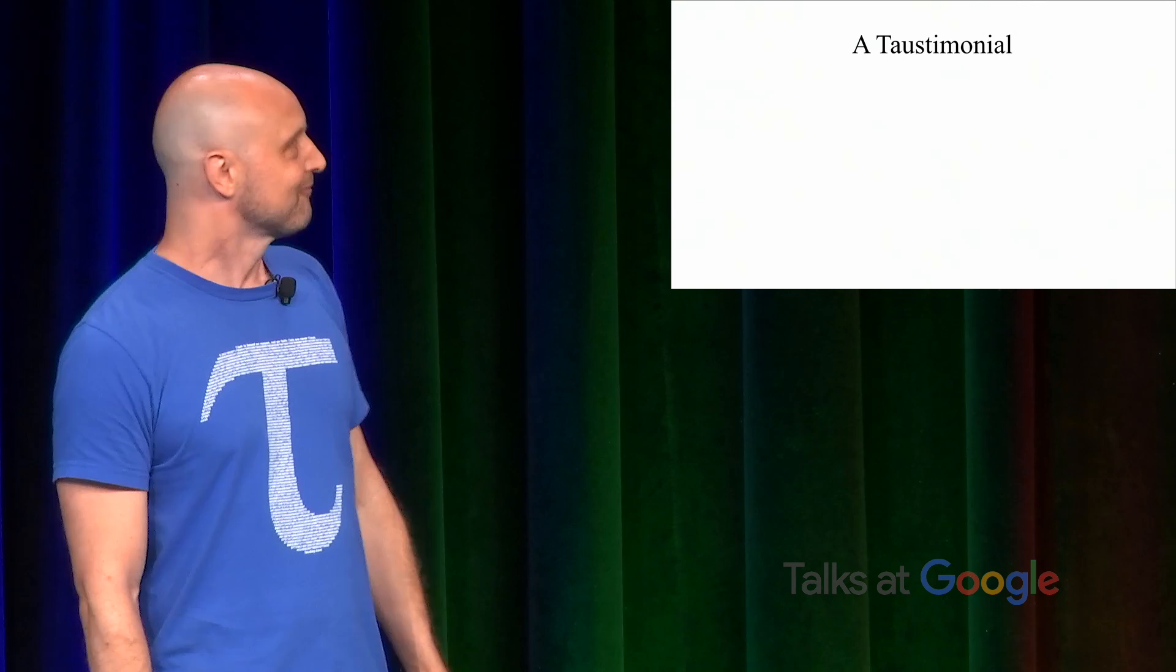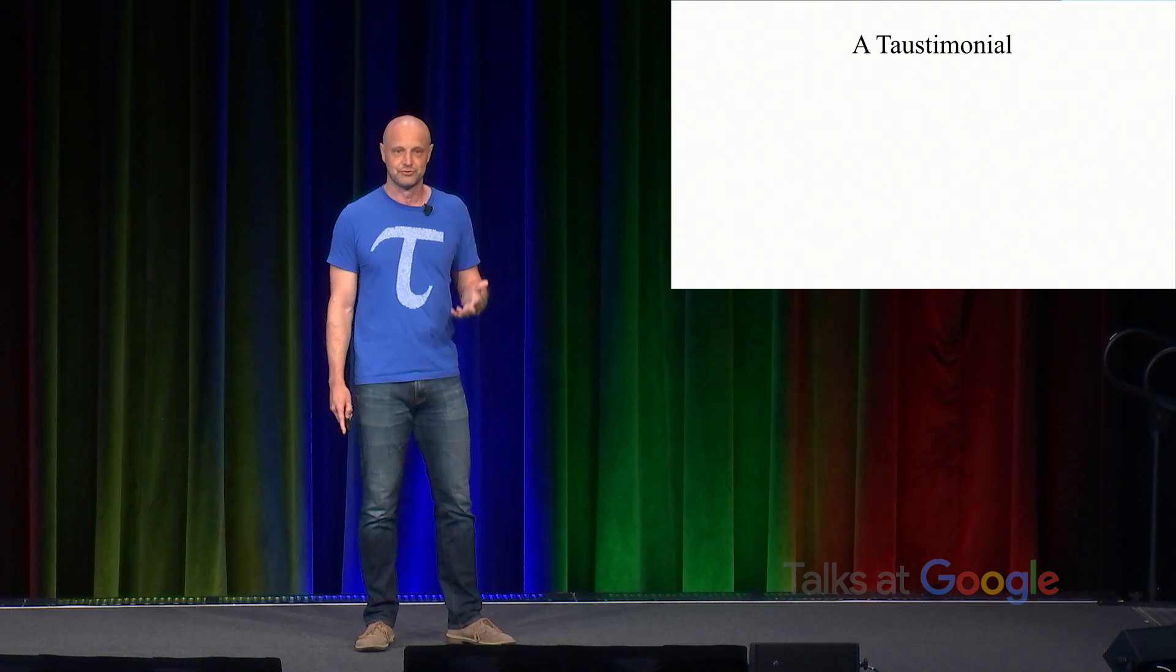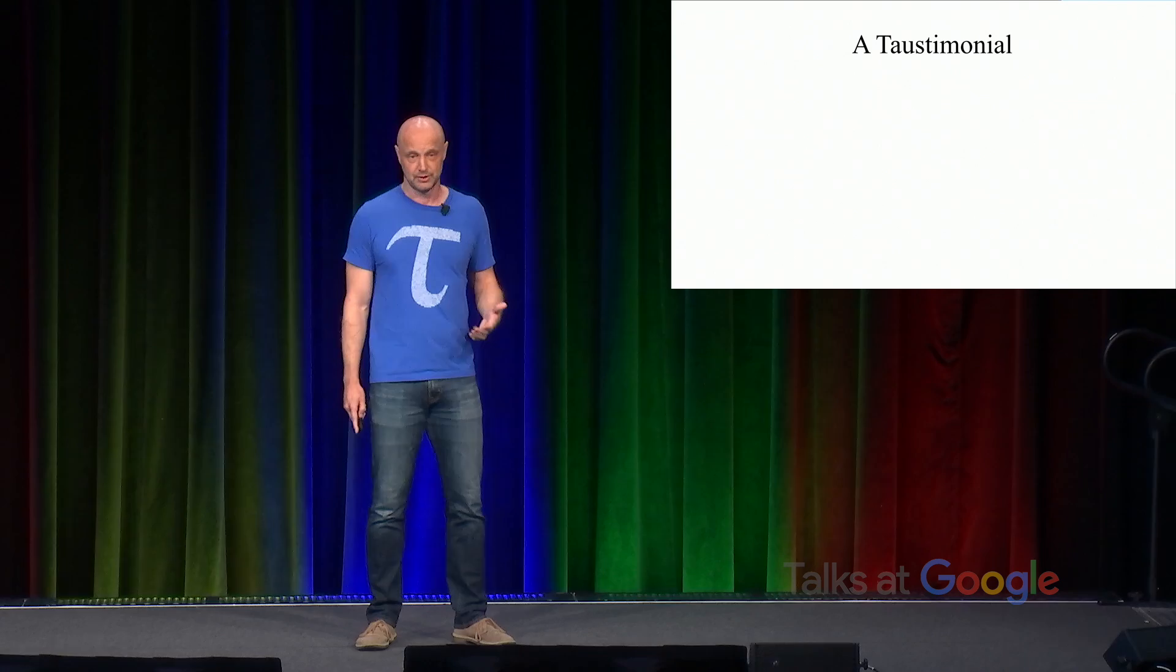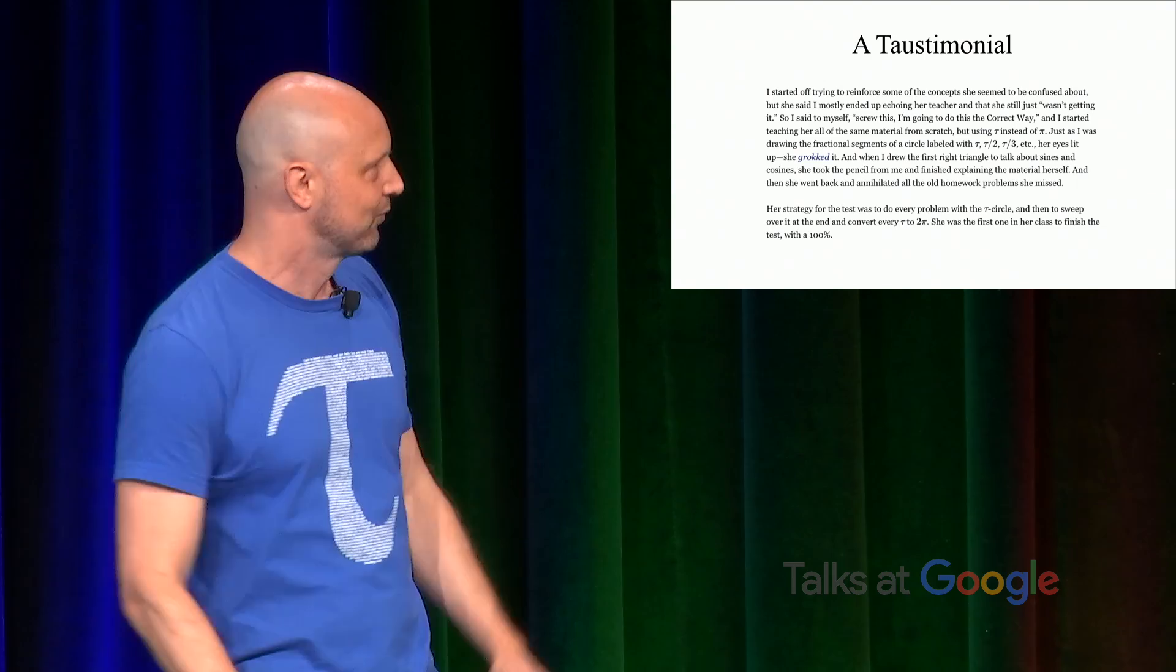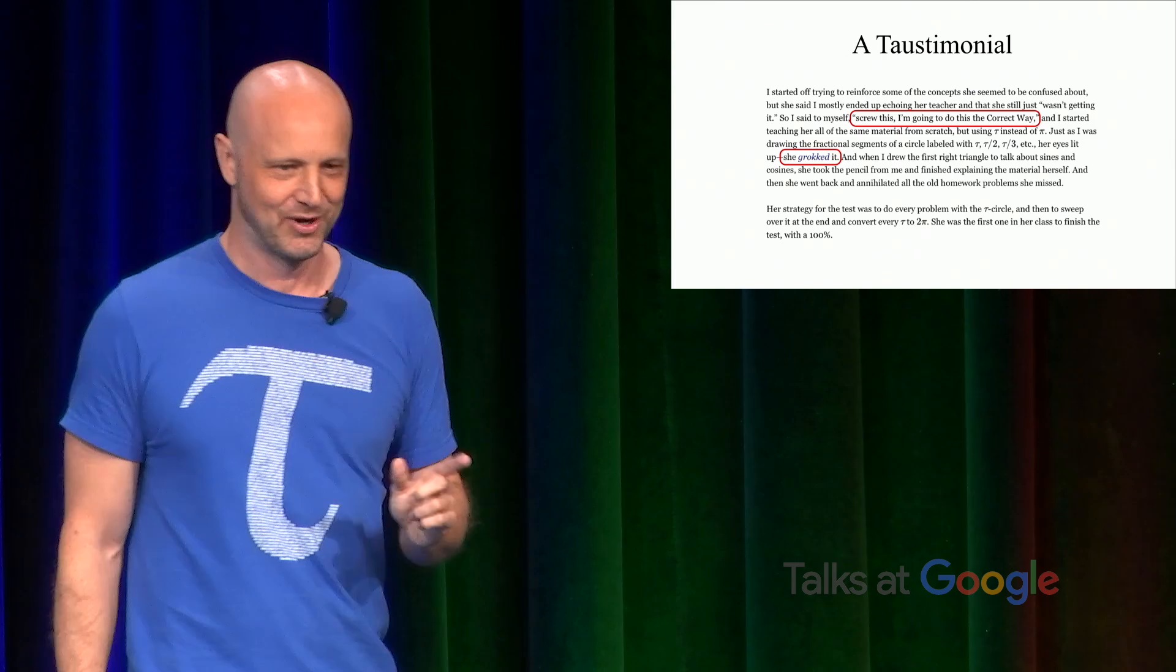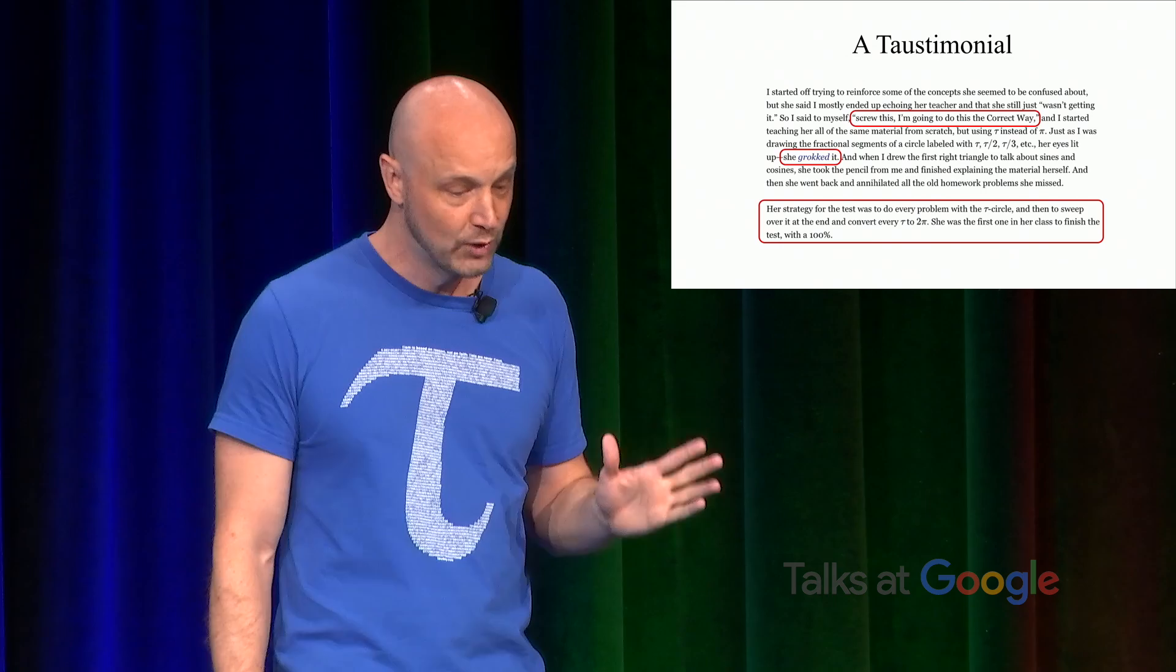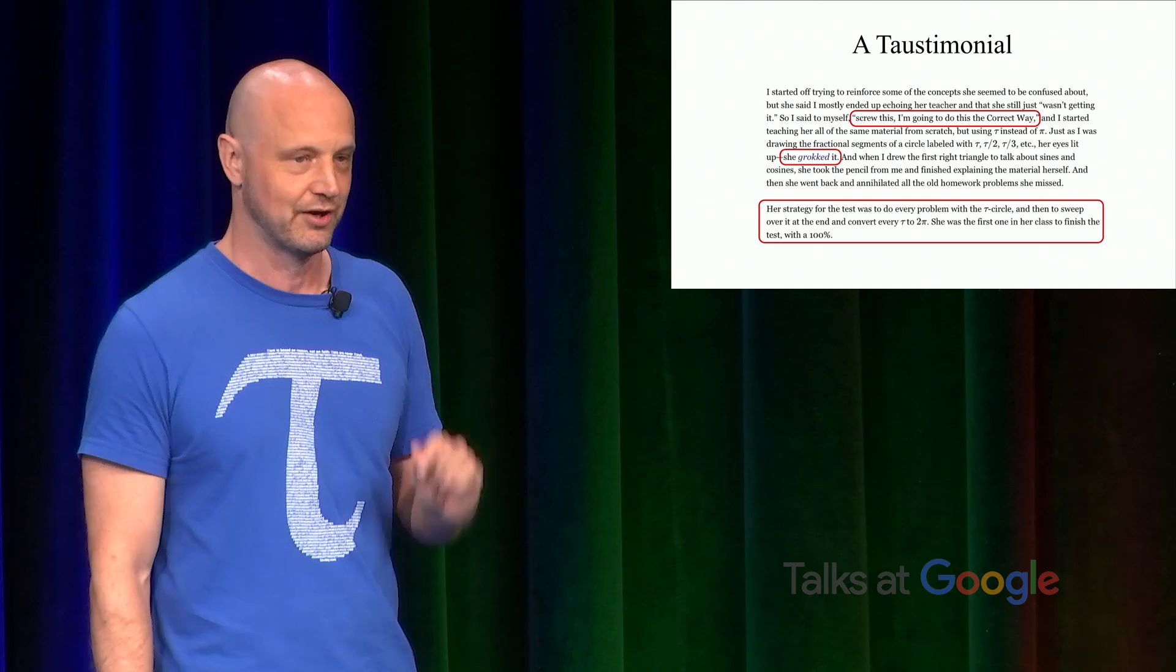So he was showing her everything the standard way and finally said, no, no. Screw this. I'm going to do this the correct way. And he switched to using tau. And she grokked it, using the term grok from Robert Heinlein's Stranger in a Strange Land to indicate that she really understood it. When the test came, her strategy for the test was to do every problem with the tau circle and then to sweep over it at the end and convert every tau to 2pi. She was the first one in her class to finish the test with 100%. So in fact, tau is much less confusing than pi. I also think it's worth noting that the idea that pi might be wrong is interesting. So this is a way of hooking people into having an interest in a subject that some people might consider a little dry.